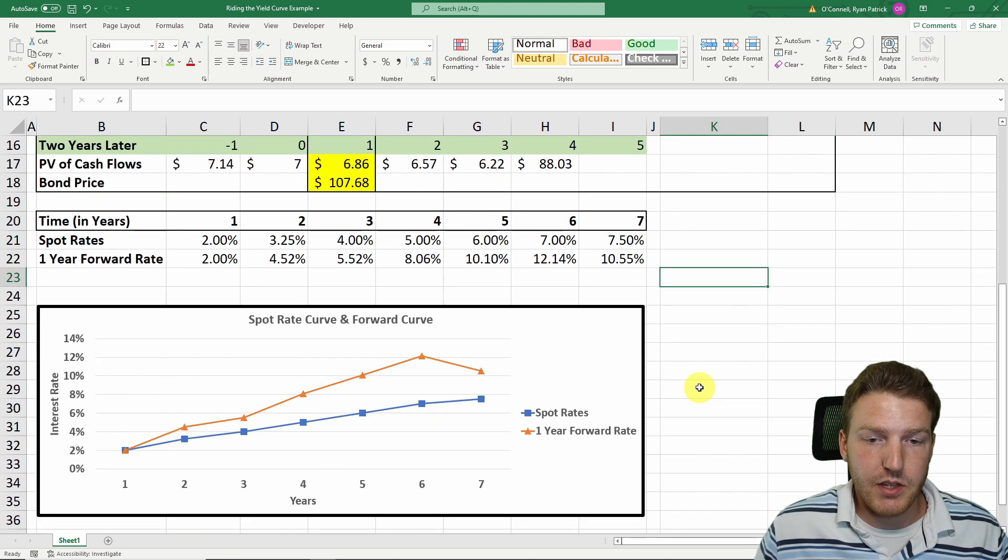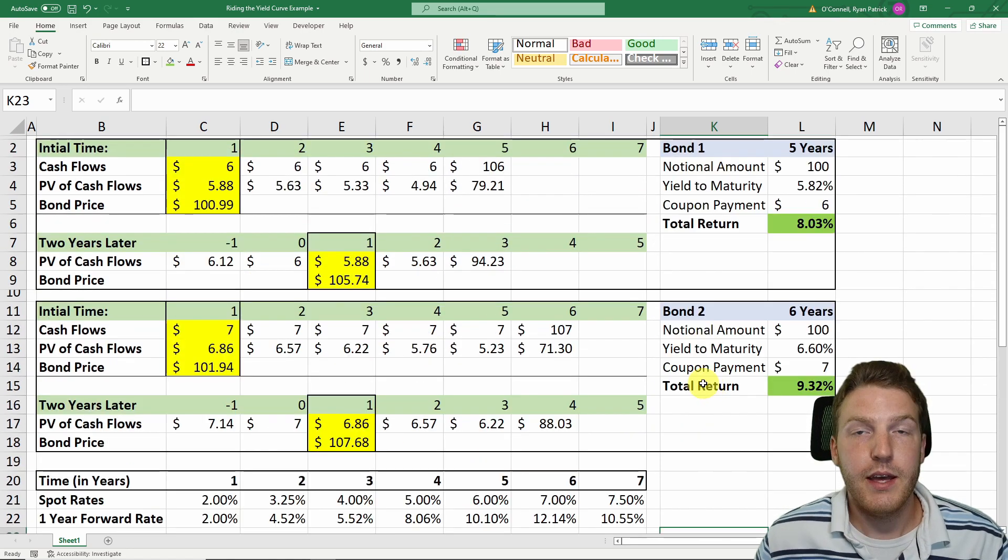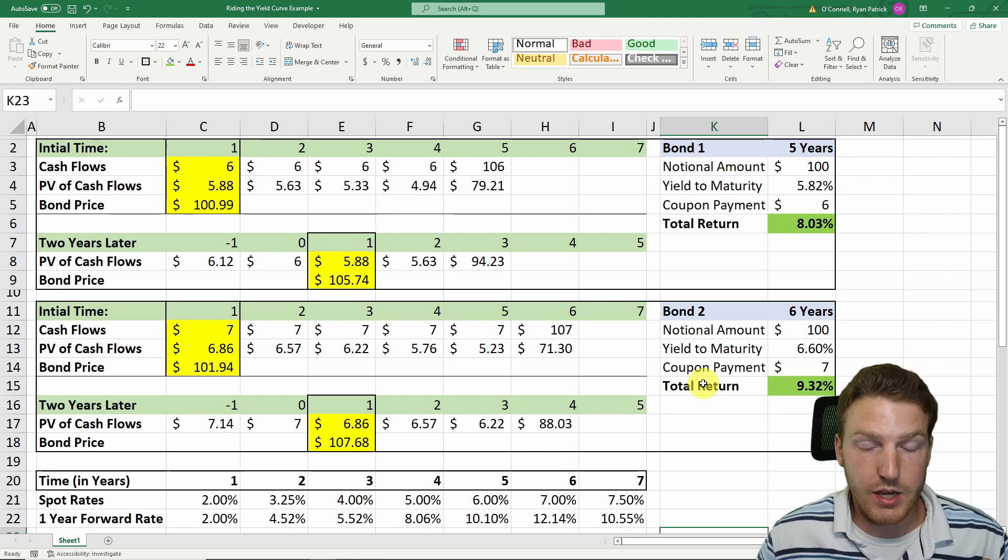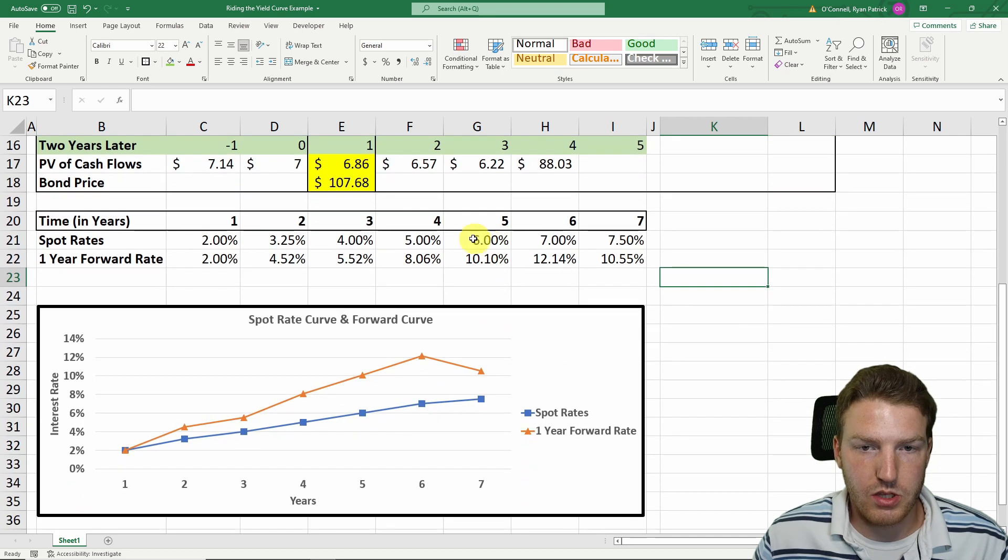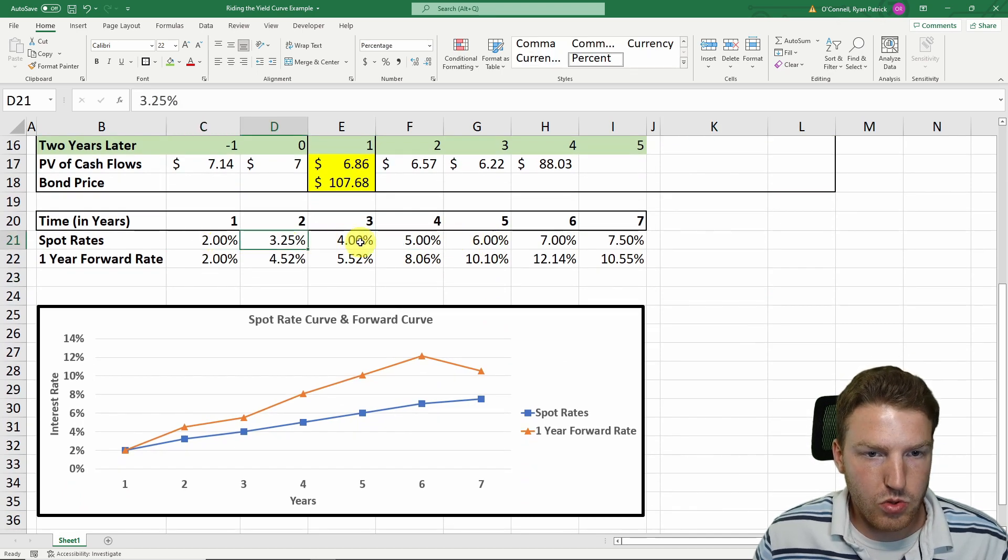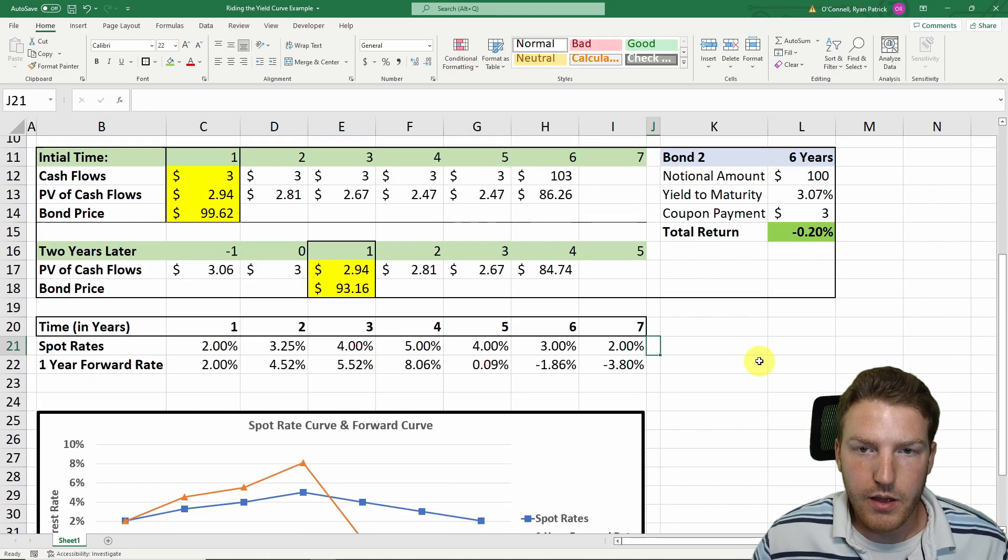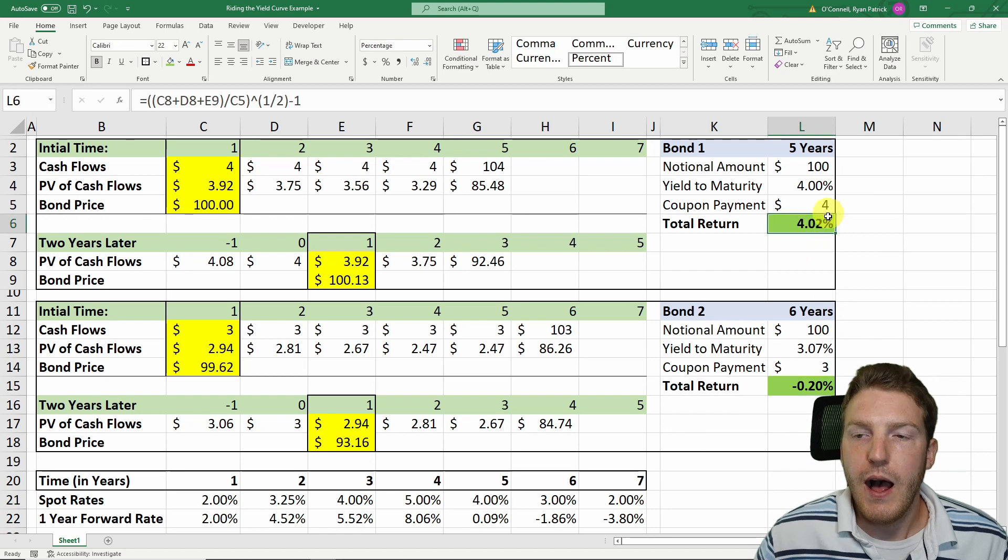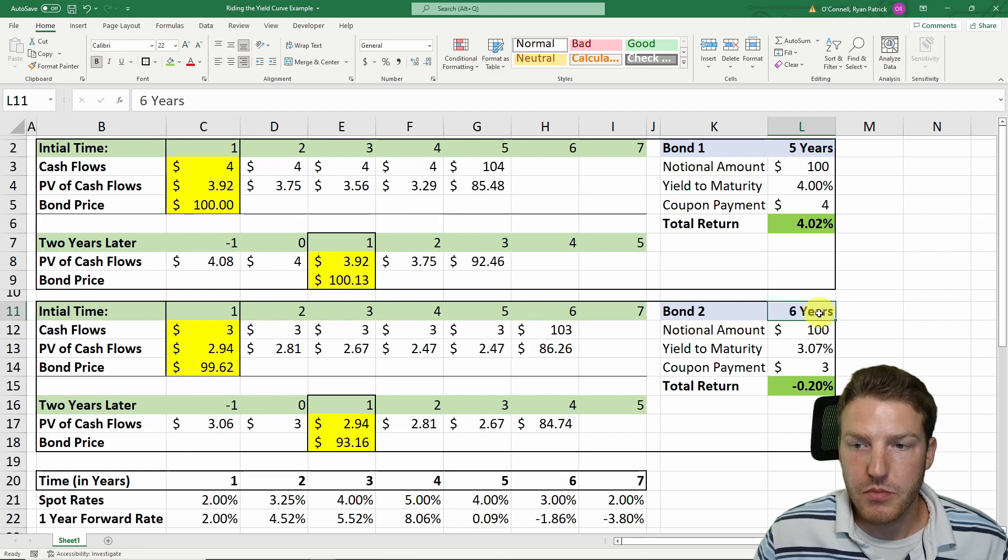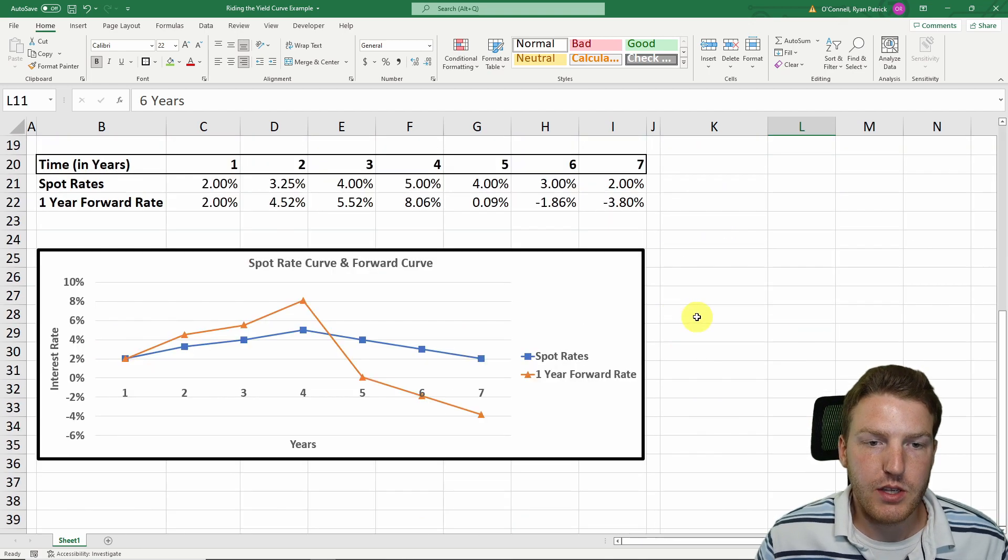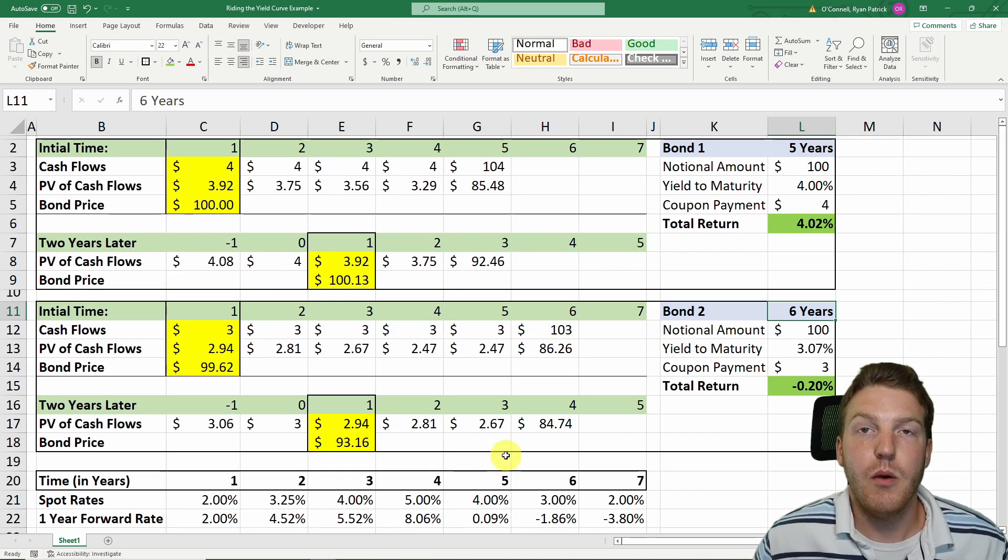But remember what I said at the beginning of the video, that if this is not an upward sloping spot curve, then riding the yield curve strategy doesn't actually work. Let's say if instead of this spot curve being upward sloping, it goes 2, 3, 4, 5, and then it goes back to 4, then to 3, then to 2. Now we see that we actually get a higher return by buying the bond that has a shorter term than the one with the longer term. This whole riding the yield curve strategy will only work if the spot curve is actually upward sloping.